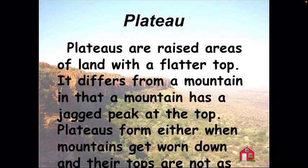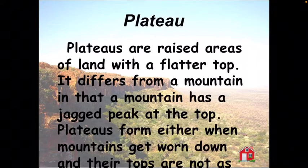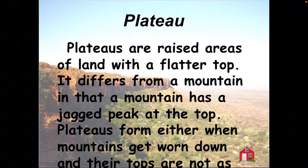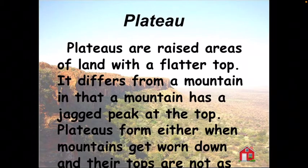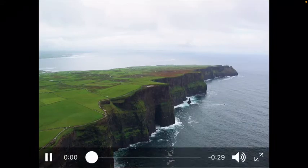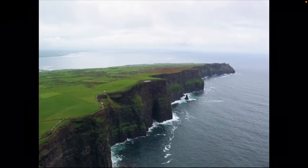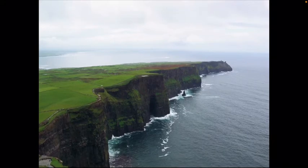Now let us look at plateaus. Plateaus are a raised area of land with a flatter top, which makes them different from mountains. Mountains have a jagged peak surface on the top, but plateaus have a very flat surface over the elevated area. Plateaus form when mountains get worn down and their tops flatten. So there are two raised landforms: hills and mountains, but this landform does not have a peak surface — it has a flat surface.